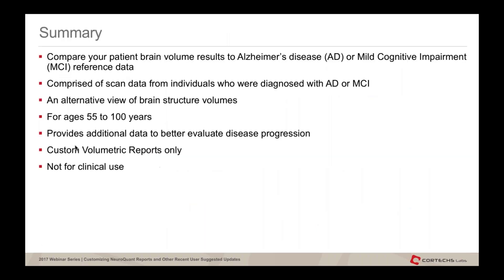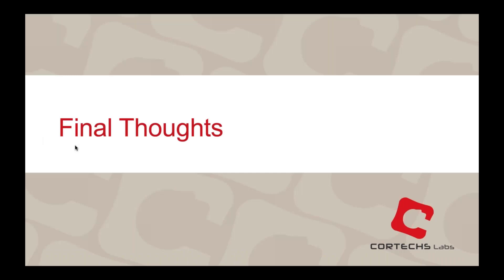The second alternative is the Alzheimer's disease reference data. For a different subject with even more severe hippocampal atrophy (total, left, and right) and increased inferolateral ventricles, running with the Alzheimer's disease reference data shows values much more centered in what is considered normal for that reference dataset. The hippocampus values move from the red area in the normative charts to the central white area of the Alzheimer's disease reference data. This is for clinical research only, not currently for clinical use, and is limited to ages 55 to 100.